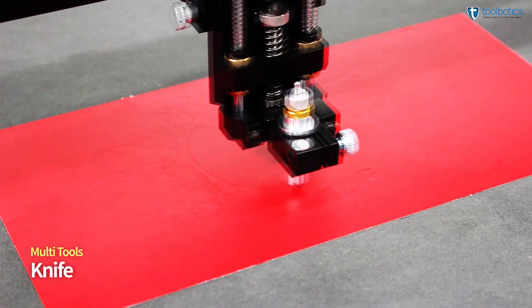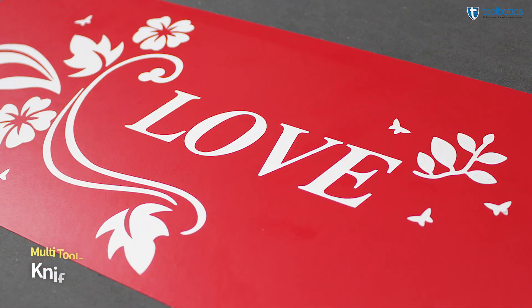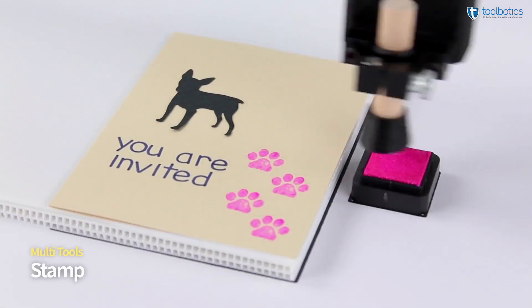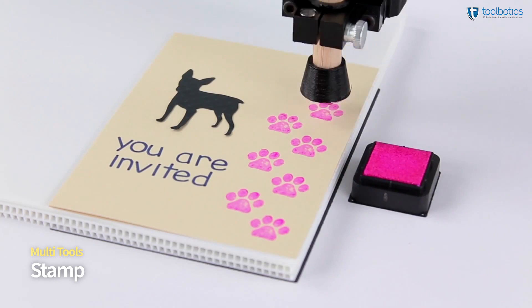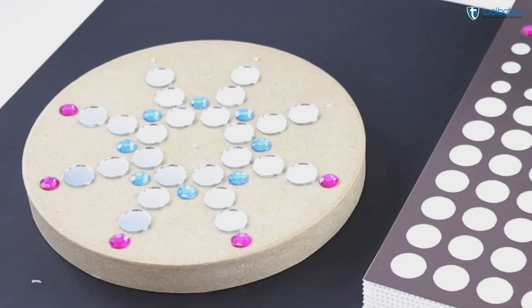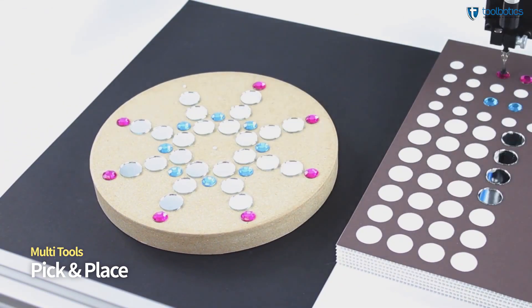Knife tool for cutting thin sheet and fabric. Accurate stamp tool. Pick and place for positioning small objects.